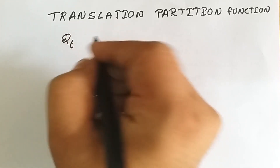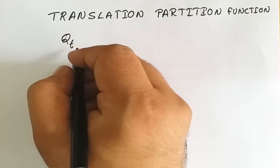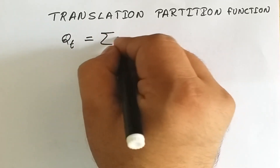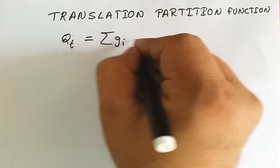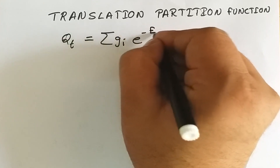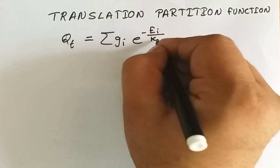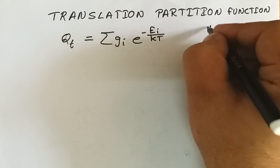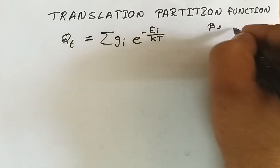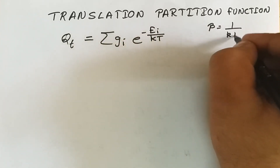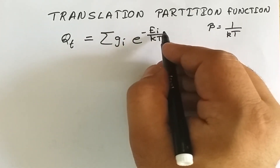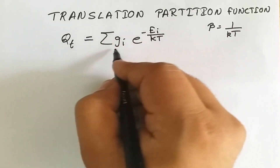The partition function associated with it is known as the translation partition function. If we write qt as our translation partition function, we can express it as summation of g_i times e raised to minus e_i upon kT, where beta equals 1 upon kT, k is our Boltzmann constant.